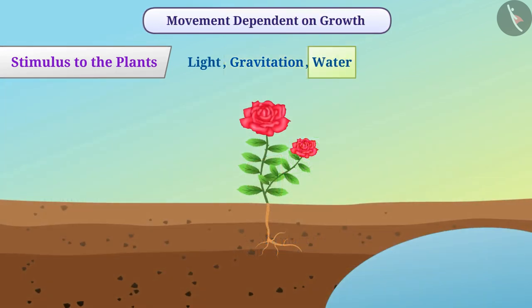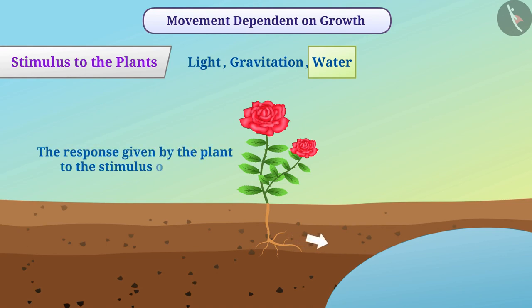Similarly, roots of the plant grow towards water. The response given by the plant to the stimulus of water is called hydrotropism.